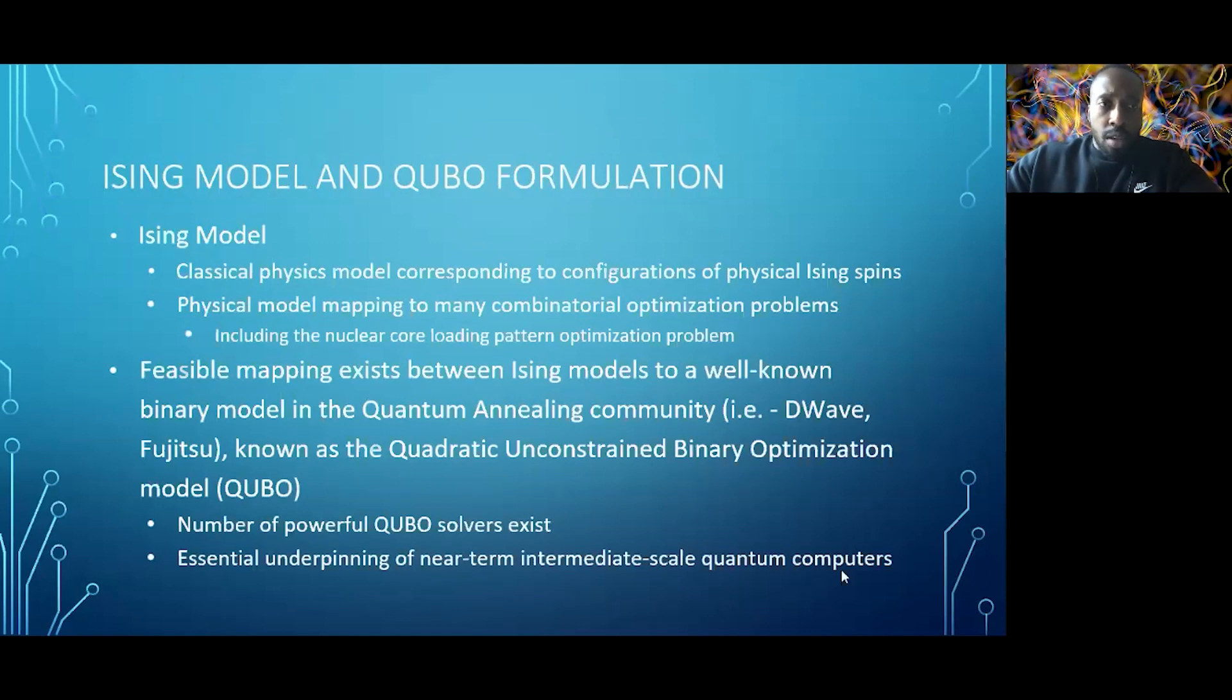Within the realm of Ising models, you can find a feasible mapping between Ising models to a well-known binary model in the quantum annealing space, such as popular hardware machines D-Wave and Fujitsu, known as the quadratic unconstrained binary optimization model or QUBO. There are a number of powerful QUBO solvers that exist, such as D-Wave, and this is essential underpinning of near-term intermediate-scale quantum computers.